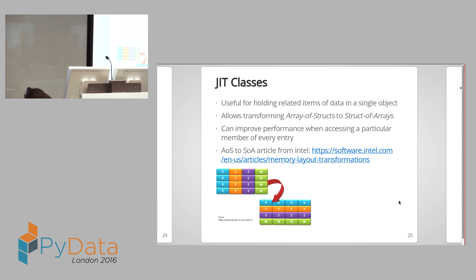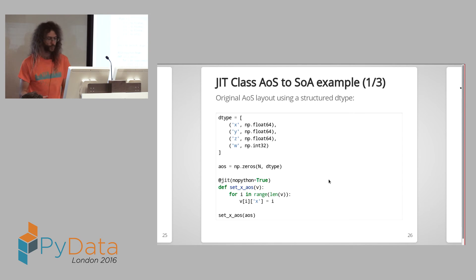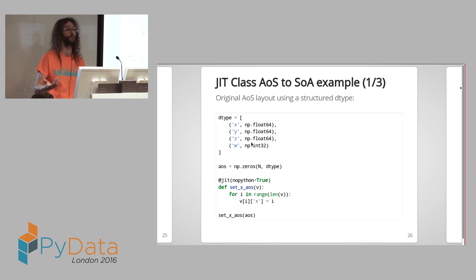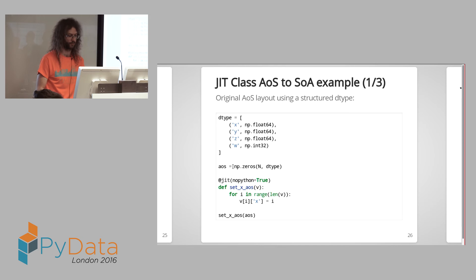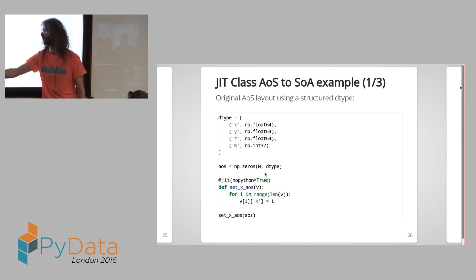Concretely: in the original array-of-structs layout, each object has x, y, z, and w all next to each other. After the SOA transformation, all the x's are next to each other, all the y's are next to each other, and so on. The original AOS layout can be implemented using a structured dtype in NumPy — you create a dtype with member names and their types, instantiate an array of that structure, and then iterate over it indexing first by offset then by member name.